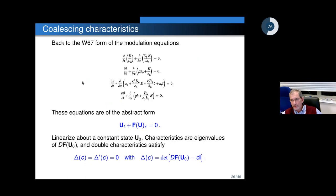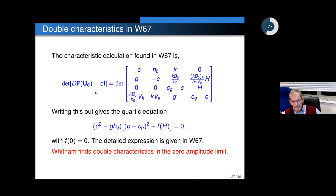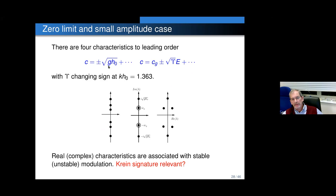Now back to W67. The main thing Whitham applies these equations to is looking at characteristics and finding that you can have double characteristics. Double characteristics are defined by the function and its derivative equal to zero. He does the explicit calculation and writes out a formula to leading order, and you get something with f at zero equal to zero. What Whitham finds is: if you compute the characteristics in the limit of zero amplitude, you get a double characteristic — the two shallow water characteristics — and another characteristic which unfolds to a square root that can change sign.